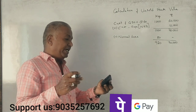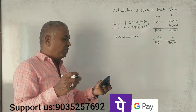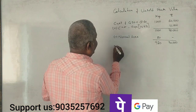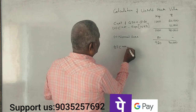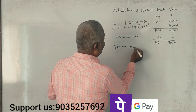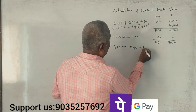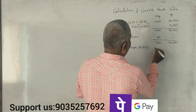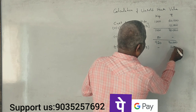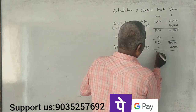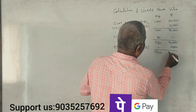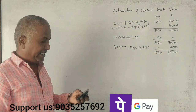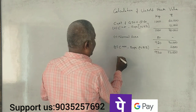Consignee incurred Rs. 2,000 as unloading charges — these are non-recurring expenses. So the total value now becomes Rs. 72,000 for 920 kgs.